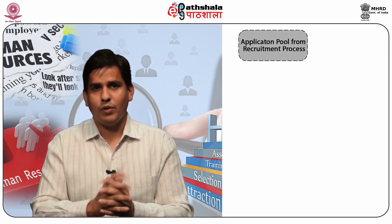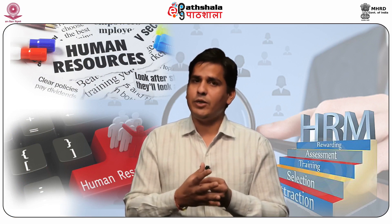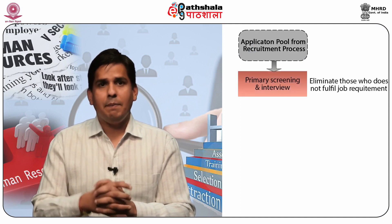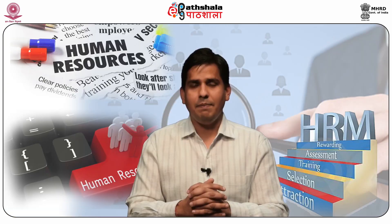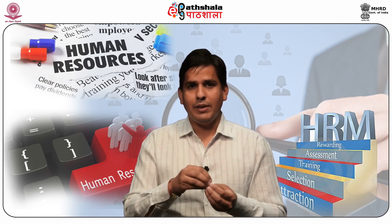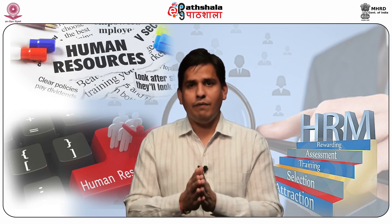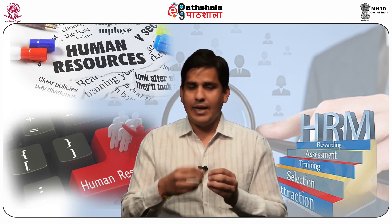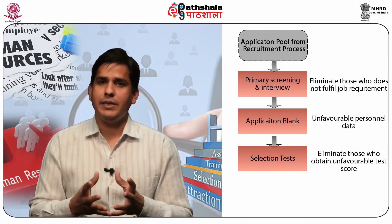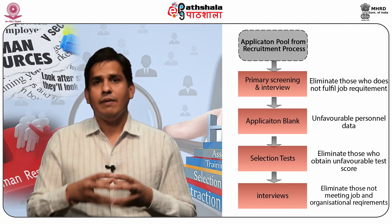The selection procedure has various steps. The first is the application pool, taken from the recruitment process. In the previous module we learned that in the recruitment process we try to accumulate an application pool. The next step is preliminary screening and interview, in which we eliminate those who do not fulfill the job requirements. After this, suitable candidates are given an application blank to fill, where unfavorable personal data leads to elimination. Then candidates come for the selection test, and those who obtain unfavorable test scores are eliminated.